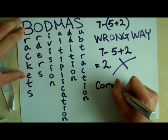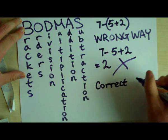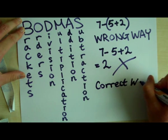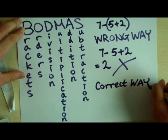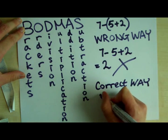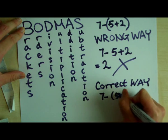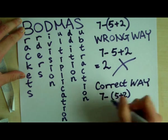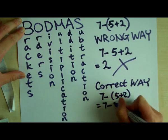The correct way is to do what is in the bracket first. So it should be 7 minus 7 equals 0.